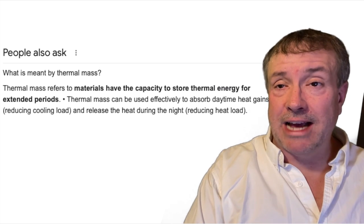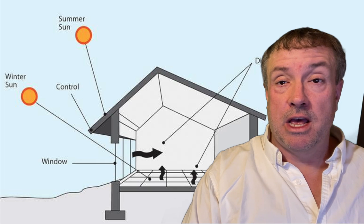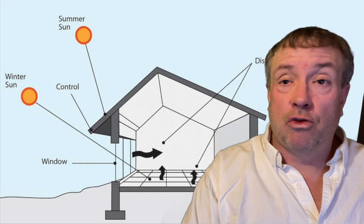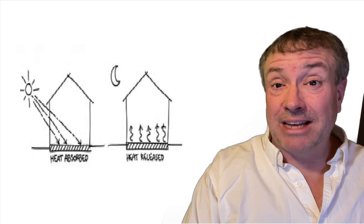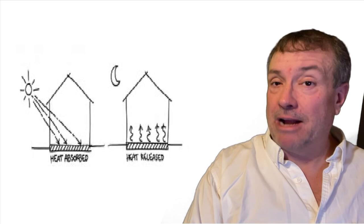Thermal mass is defined as materials that have the capacity to store thermal energy for extended periods. Thermal mass can be used effectively to absorb daytime heat gains, reducing cooling load, and release the heat during the night, reducing heat load. Thermal mass absorbs heat and then releases it slowly. Kind of like a heat battery. I use the term battery here, but strictly defined, a battery is for electrical energy and we're talking about thermal energy, not electrical. But using the term battery, understanding it's a heat battery and not an electrical battery, describes the properties of a thermal mass quite well.